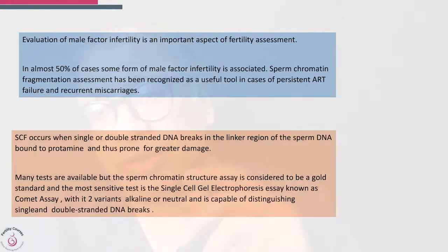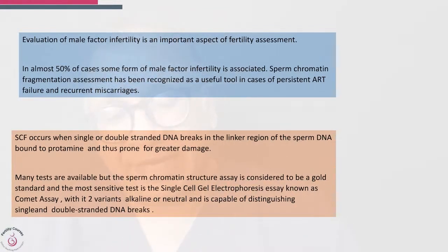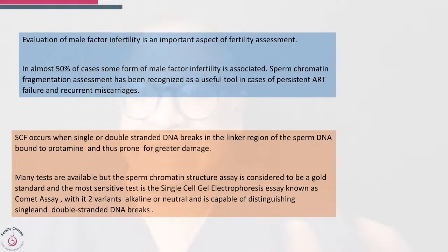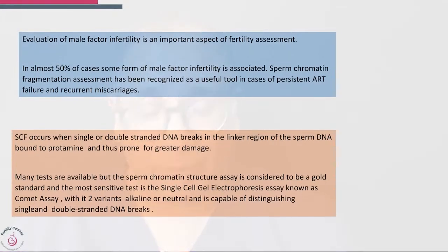The fragmentation occurs when single or double-stranded DNA breaks in the linker region of the sperm DNA, which is bound to protamine and thus prone to greater damage. Many tests have been developed to ascertain sperm chromatin structure, and the gold standard — the most sensitive — is single-cell electrophoresis, also known as the comet test. It has two variants and is capable of distinguishing single or double-stranded DNA breaks. This test is now available worldwide.